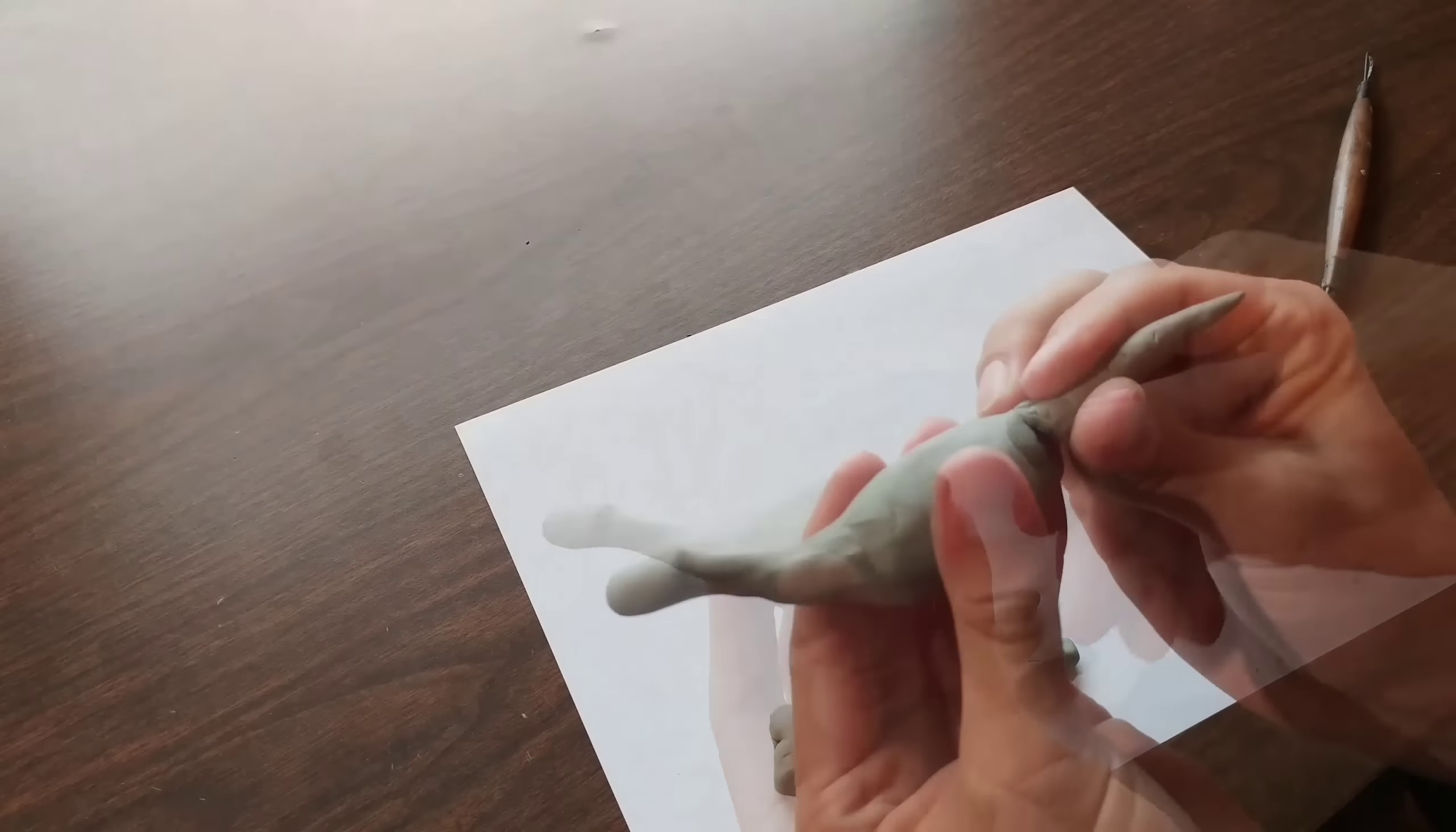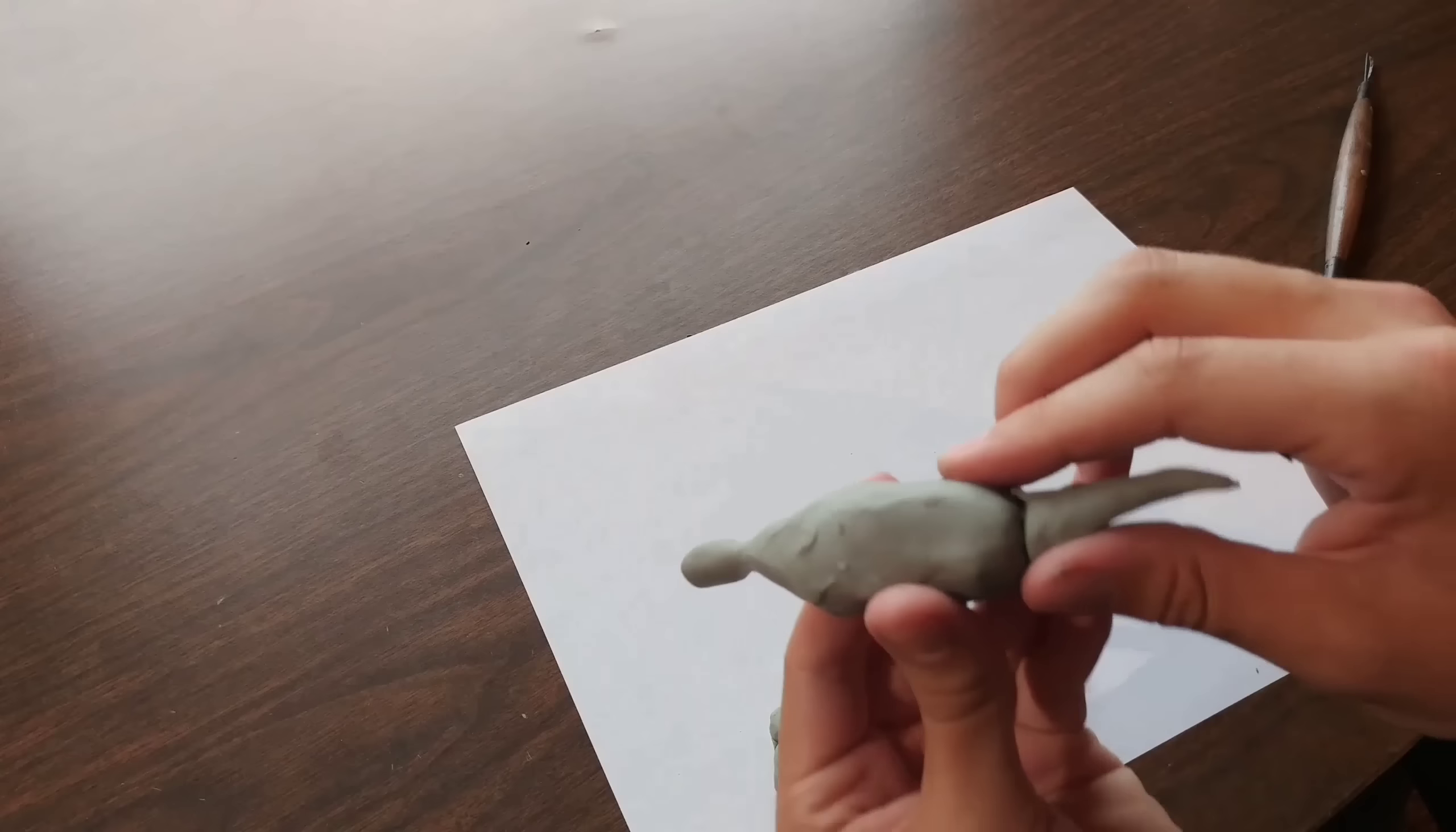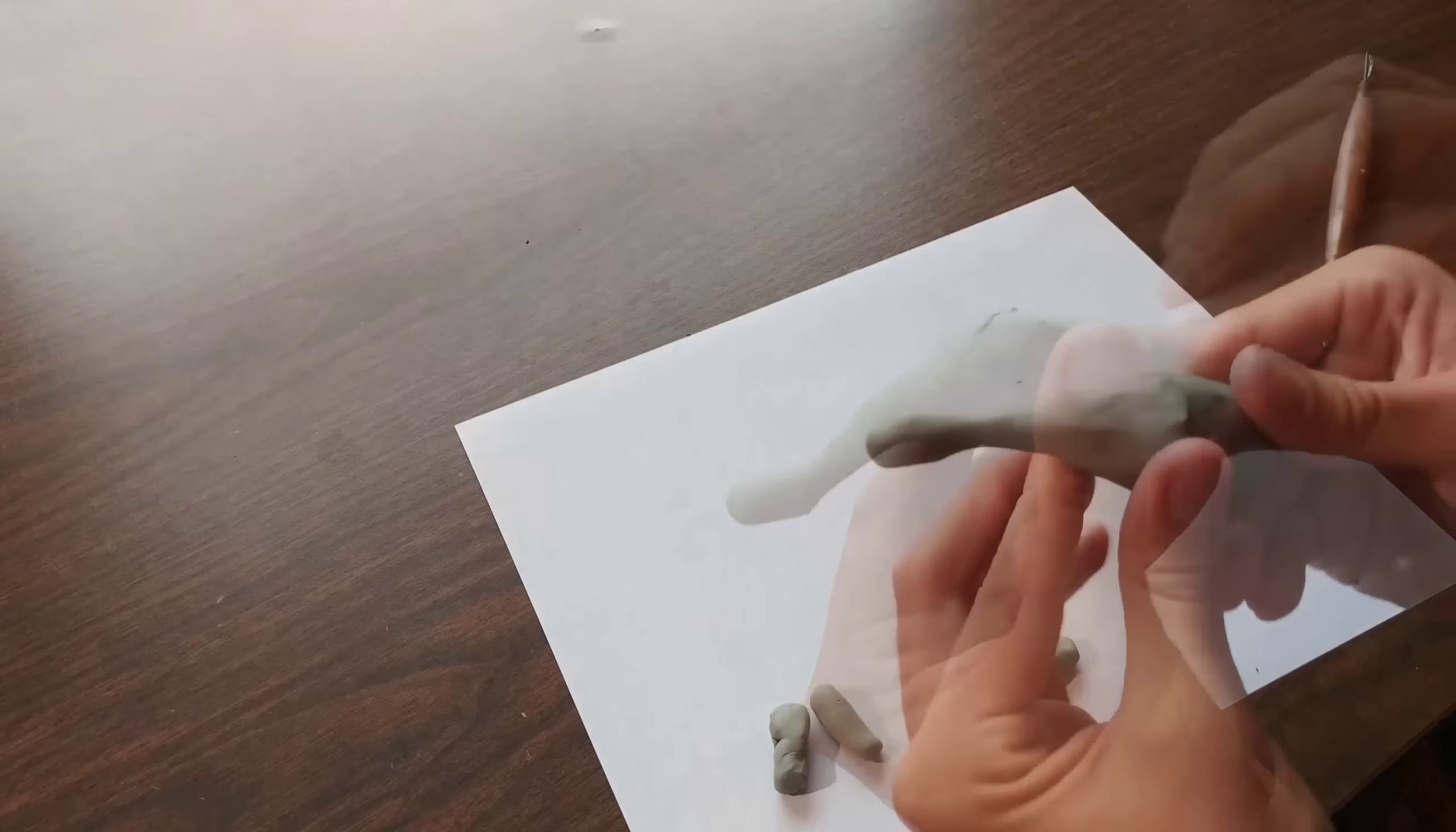And then go ahead and do the same thing to the tail. And here we want to again blend in the seams by just smoothing that clay back and forth with our fingers and our thumb. And you want the body to be a little bit round in appearance and then taper out to the head and the tail.